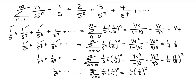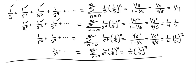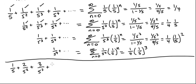Now let's add all the left-hand sides together. We have 1/5, then 1 over 5 squared added twice giving 2 over 5 squared, and 1 over 5 to the 3rd added 3 times giving 3 over 5 cubed, plus 4 over 5 to the 4th and so on. That's exactly the series we were looking at: the summation from 1 to infinity of n divided by 5 to the n.